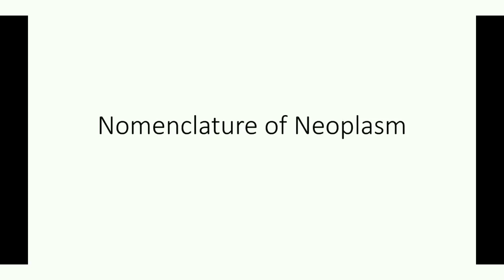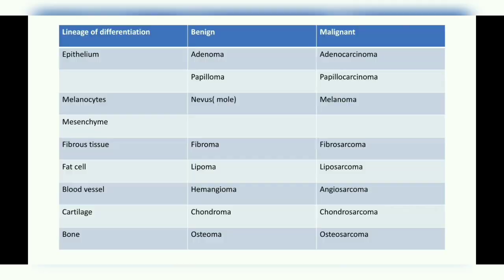Today we will learn about a topic in pathology — the nomenclature of neoplasms. A neoplasm can be a benign subtype or a malignant subtype. There are several lineages of differentiation. First is epithelial tissue, which lines the surface of the body — the skin, gut, urogenital tract, etc. In case of a benign tumor, the name usually ends with '-oma,' whereas the malignant tumor of an epithelium is called a carcinoma.